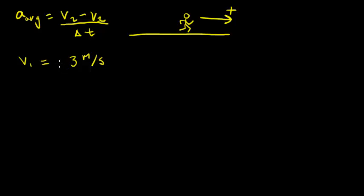is a backpedaling velocity. So that means he's running backwards at 3 meters per second, and that means we're going to give that a negative sign. At the end, he's running forwards at 6 meters per second, and running forwards is positive, so we'll leave that as positive 6 meters per second.